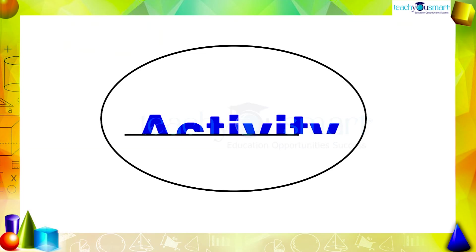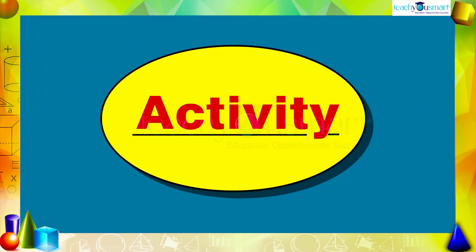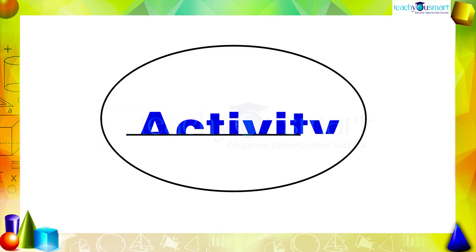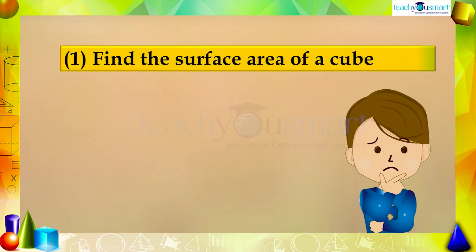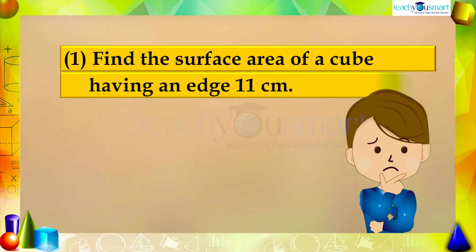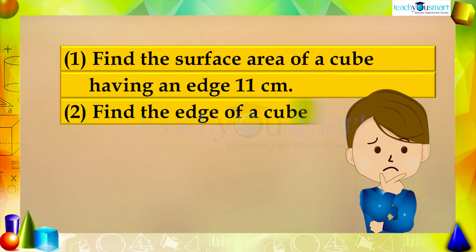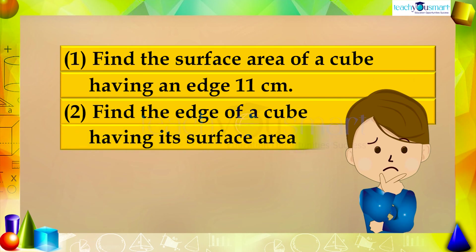The surface area of a cube is 6a² square units. Before winding up, let's do an activity to check how much you understood the topic. One: find the surface area of a cube having an edge of 11 centimeters. Two: find the edge of a cube having a surface area of 96 square centimeters.